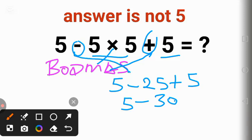We subtract 5 from 30 which will give us minus 25. This is the correct answer. Thank you for watching. Kindly subscribe to my channel, like my videos, and share.